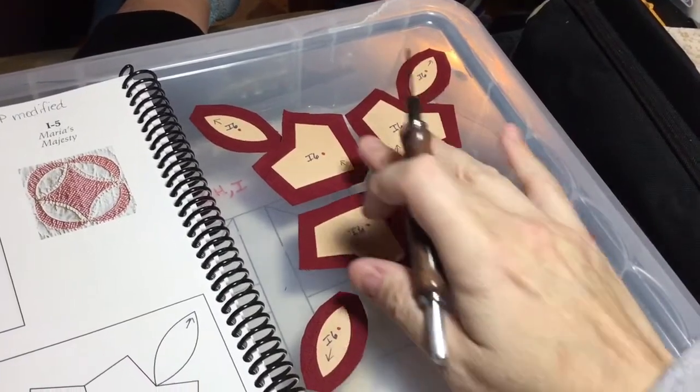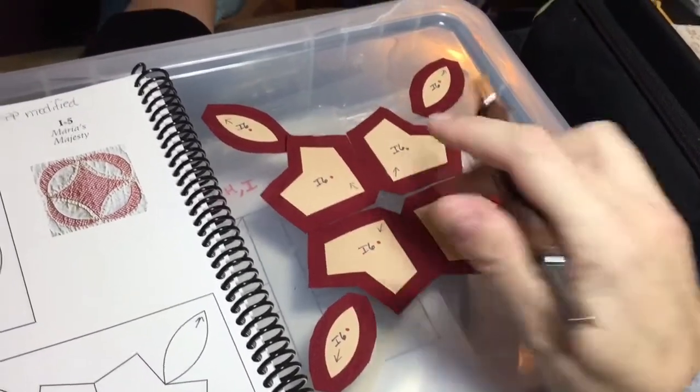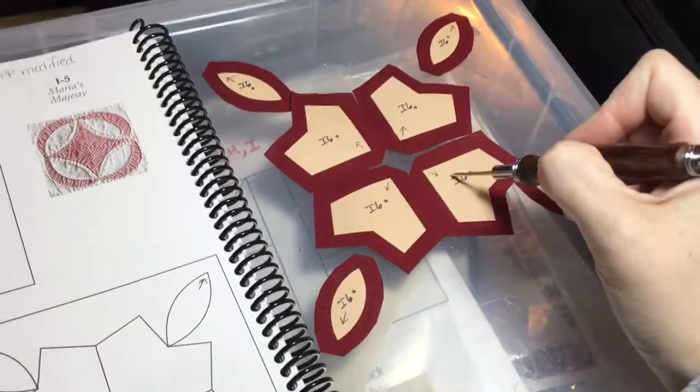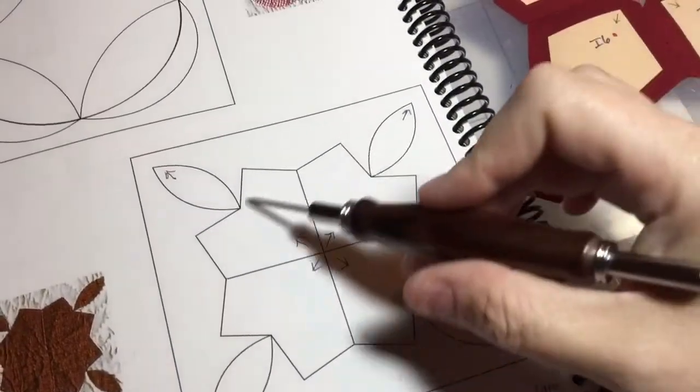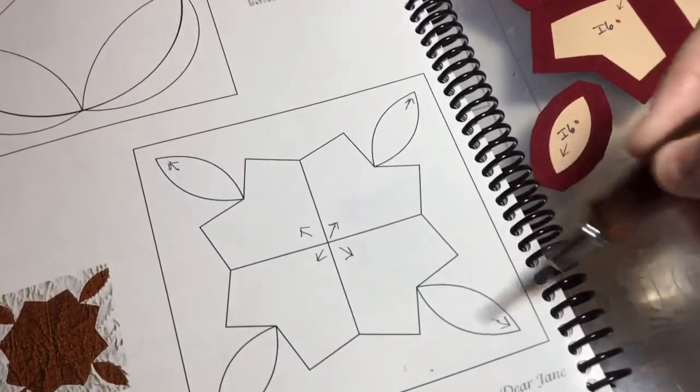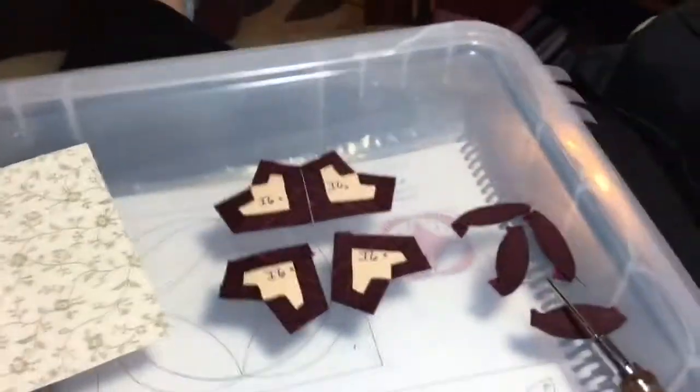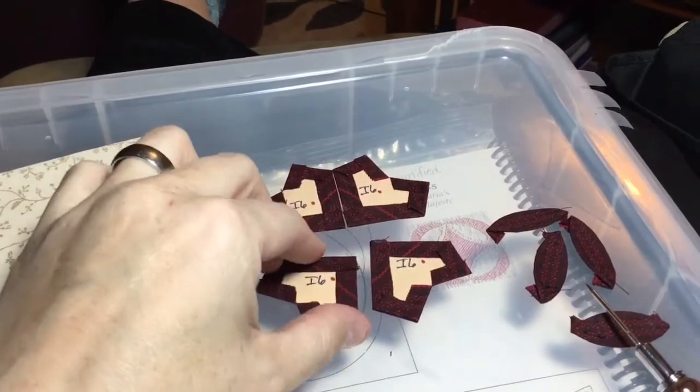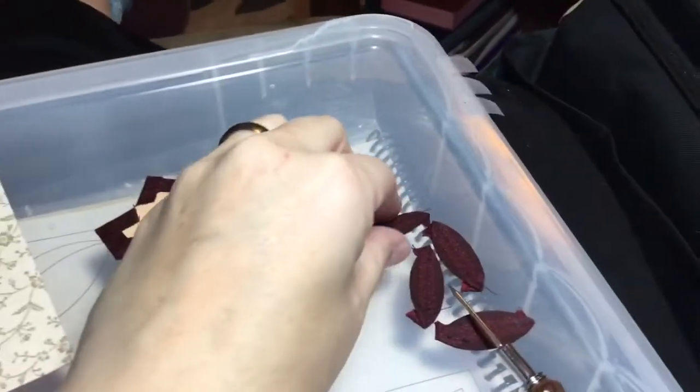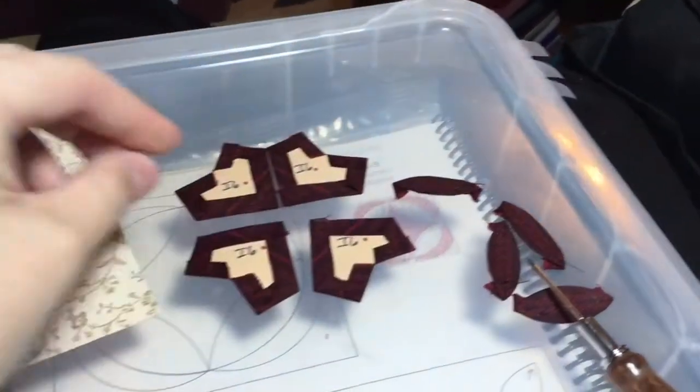I'm most likely going to assemble these four together and then applique this on, and then applique these on separately. So I've got my square basted, I've got my kind of sort of heart pieces basted, and I've got my little footballs gathering stitch basted.